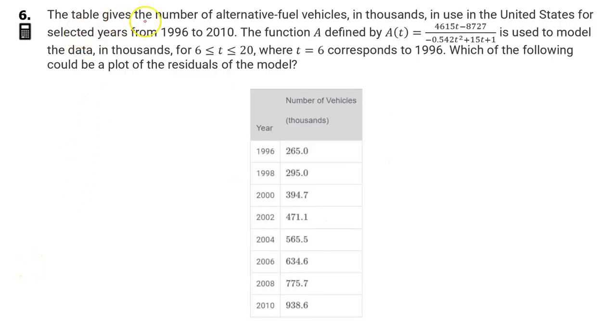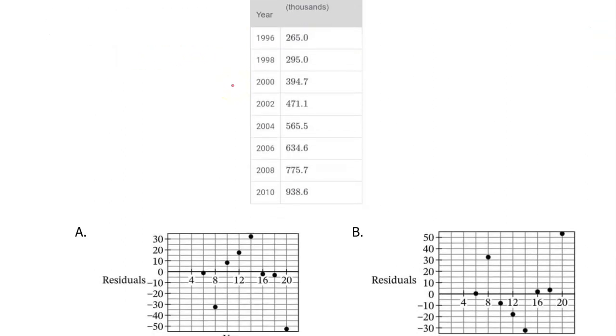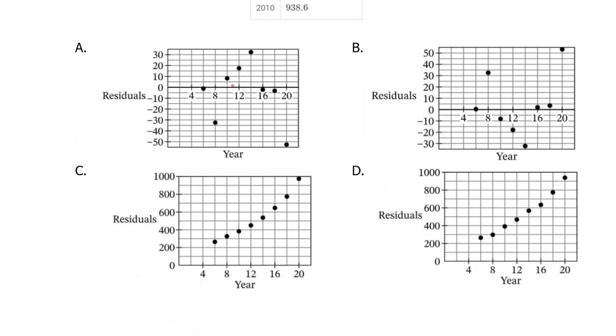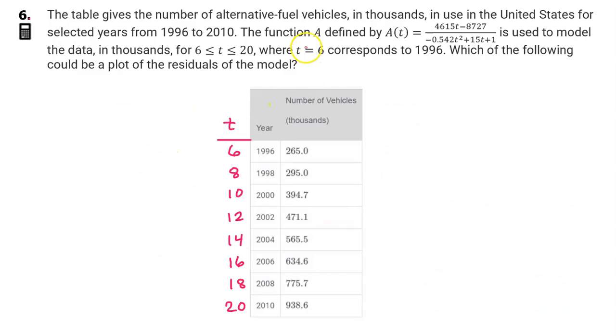Number 6. The table gives the number of alternative fuel vehicles in thousands in the United States for selected years from 1996 to 2010. The function a, defined by a of t equals this expression, is used to model the data in thousands for t equals 6 to t equals 20, where t equals 6 corresponds to 1996. Which of the following could be a plot of the residuals of the model? And they gave us four plots to choose from. First of all, if t equals 6 corresponds to 1996, here are all of the t values for the remaining years.